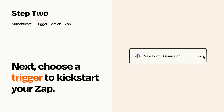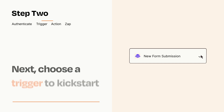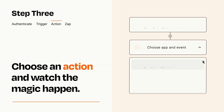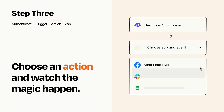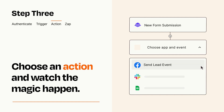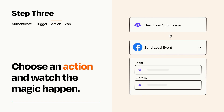This last part is where the magic happens. Choose the action you want to happen in your target app. You'll see a bunch of fields where you can specify the details of your Zap. You can type free form text or pull data in from your trigger step as needed.